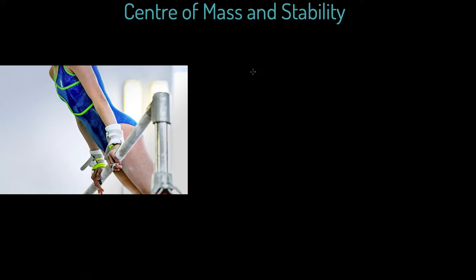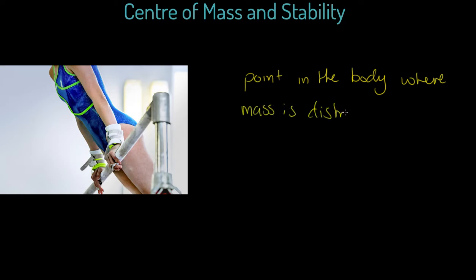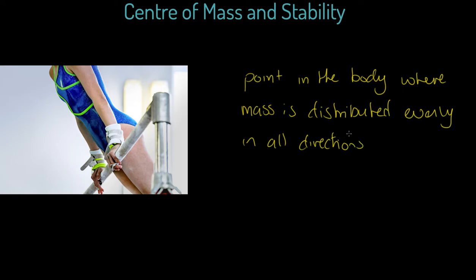Let me immediately define center of mass for you. It is the point in the object — not necessarily the human body — where mass is distributed evenly in all directions. For a uniform object, that's easy to identify because it's literally the center of the object. For a human being, the center of mass is roughly at the navel. It is an imaginary point, it can shift, and we can manipulate it.